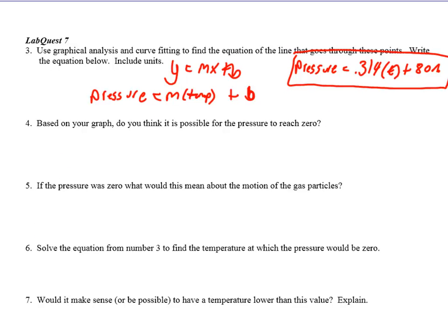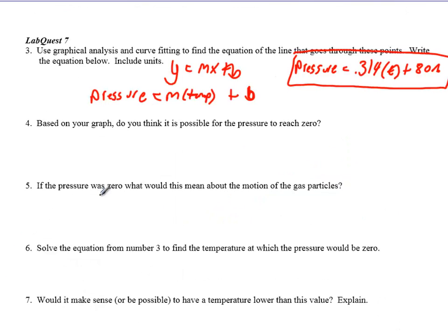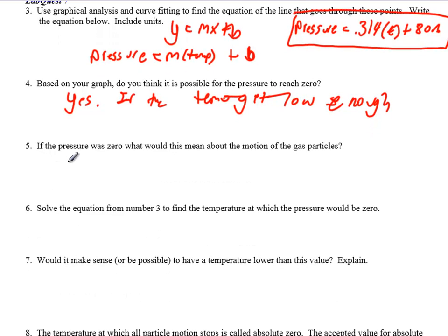Based on my graph, do I think it's possible for the pressure to reach 0? Well, if we go back and take a look at my data, I can see here at 0 degrees the pressure is not at 0. But if this line keeps going and it's possible to have negative temperatures, then sure. My line can be extended to reach 0. So yes, if the temp gets cold enough, and 0 degrees Celsius is not low enough, but maybe there is a temperature that is. If the pressure was 0, what would this mean about the motion of the gas particles? Now remember, pressure is caused by the particles bouncing off the wall of the container. So if there is no pressure, that means the particles aren't bouncing off the walls of the container anymore. And that means they're all just kind of sitting in one spot. And if that's the case, the gas particles are basically not moving. So the gas particles stop moving.